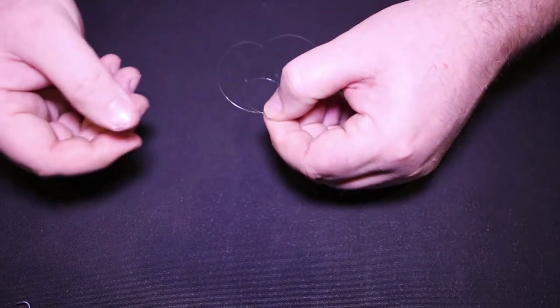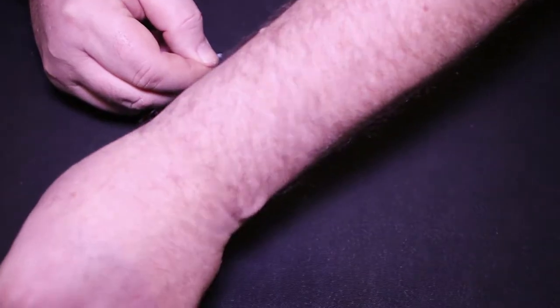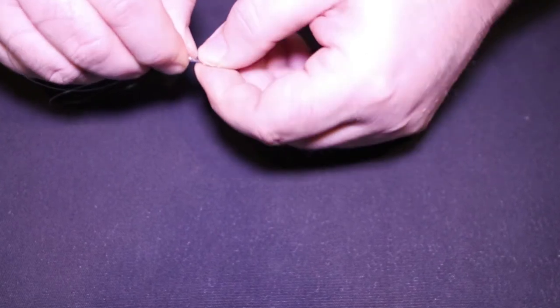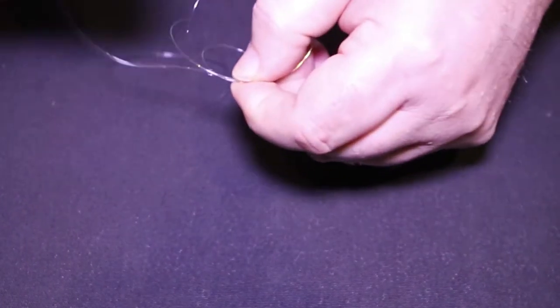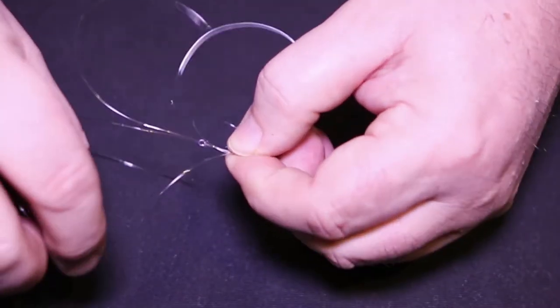Form yourself a loop. We're looking to tie a grinner knot over the hook, therefore incorporating the hook into the knot itself.